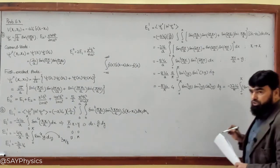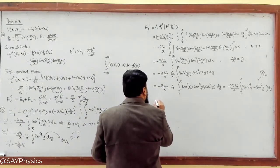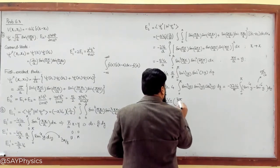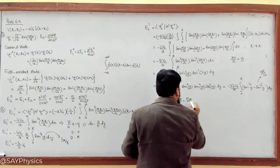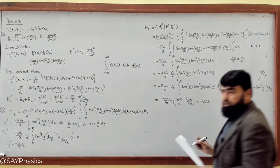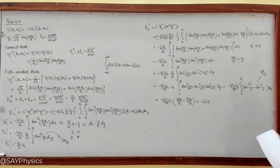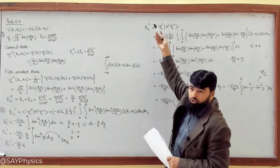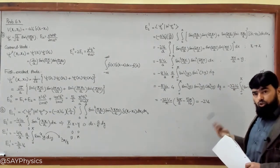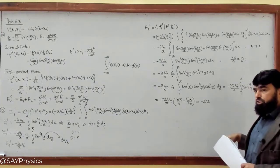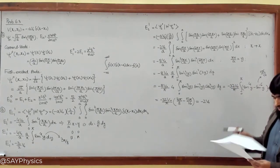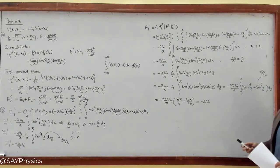Putting in these values: minus 32v₀/π times (3π/8 − 5π/16), this equals minus 2v₀. So the first order correction to the first excited state energy is E21 = minus 2v₀. This gives us the ground state energy and first excited state energy both modified when we consider the interaction between the bosons. This is the solution of the problem.